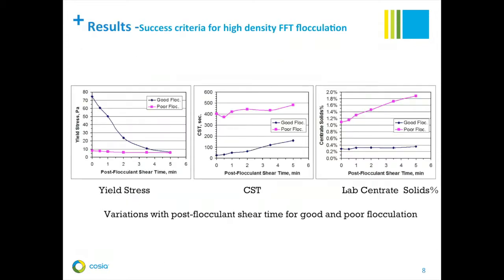Now let's look at the development of the four criteria for high-density FFT flocculation. This figure shows yield stress as a function of post-flocculant shear time. For good flocculation, your yield stress at time zero is higher, and when you increase shear time, the yield stress goes down. For poor flocculation, the yield stress is almost the same as the FFT feed — it's not changing very much.